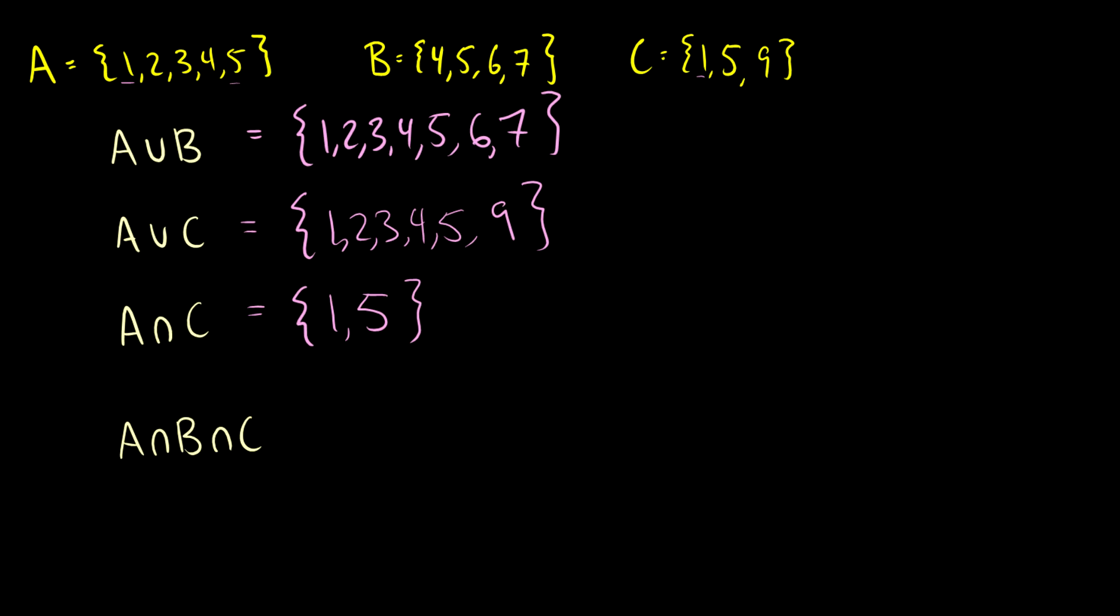What about A intersection B intersection C? Well, this time we're looking for common elements between all three sets. So is there any element in all three sets? Well, yeah, this 5 is in A, 5 is in B, and 5 is in C. So A intersection B intersection C is just going to be the set containing 5.